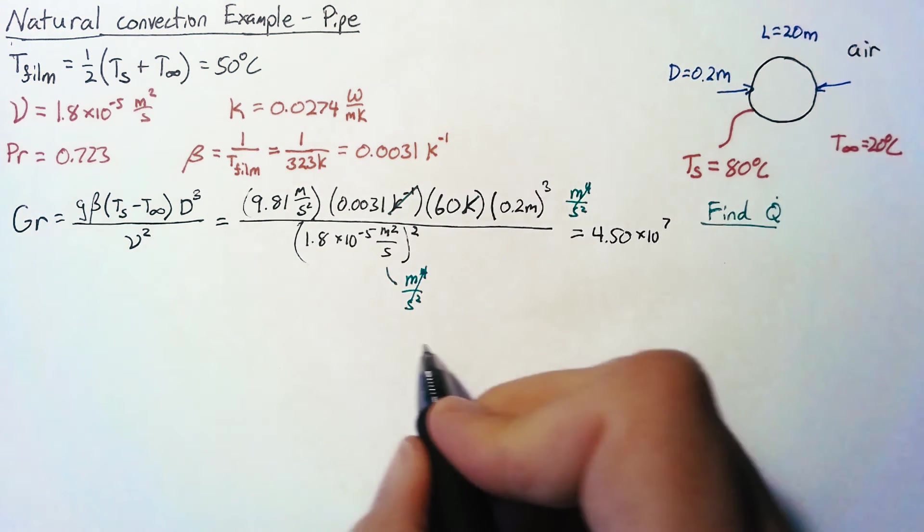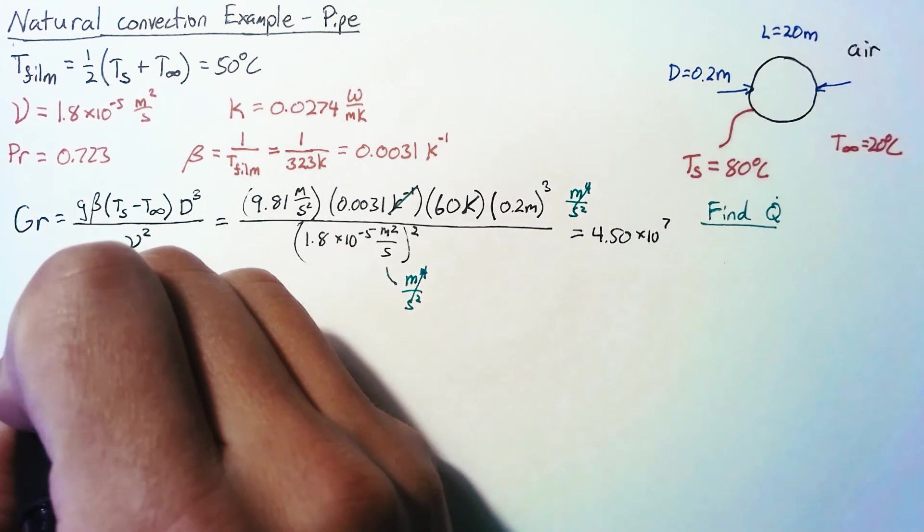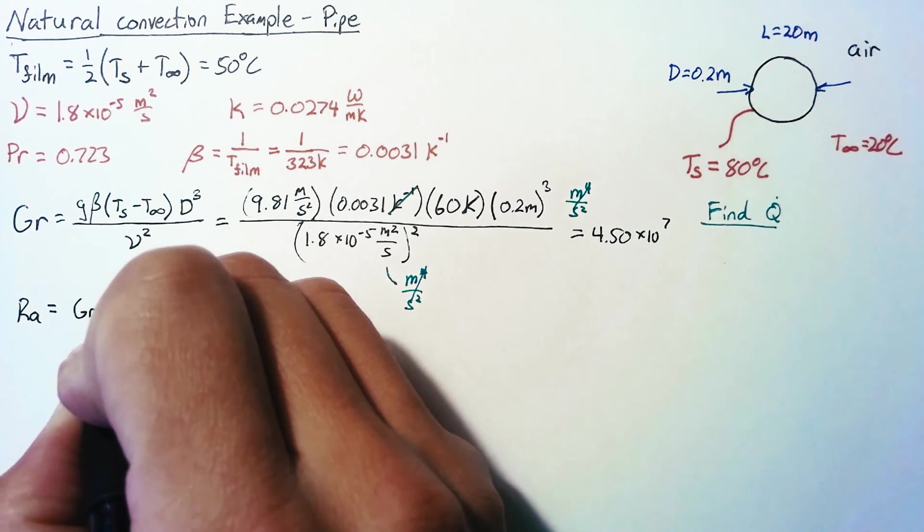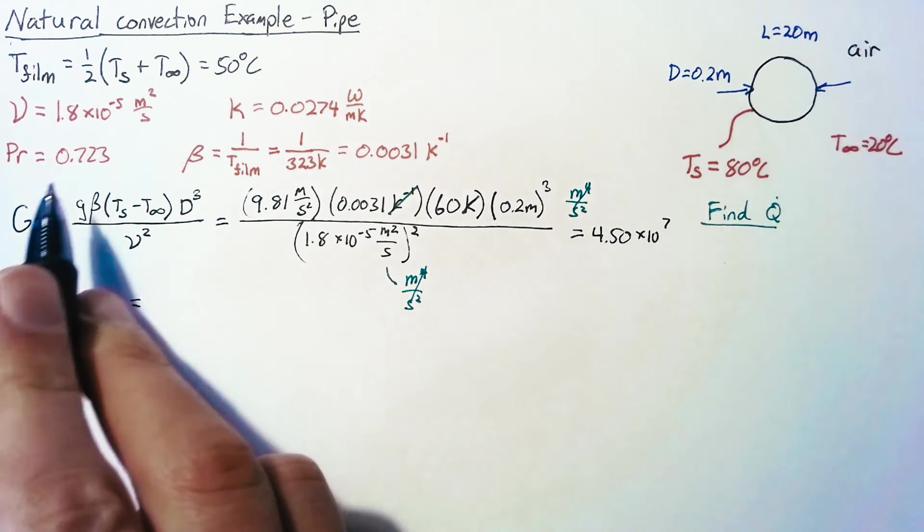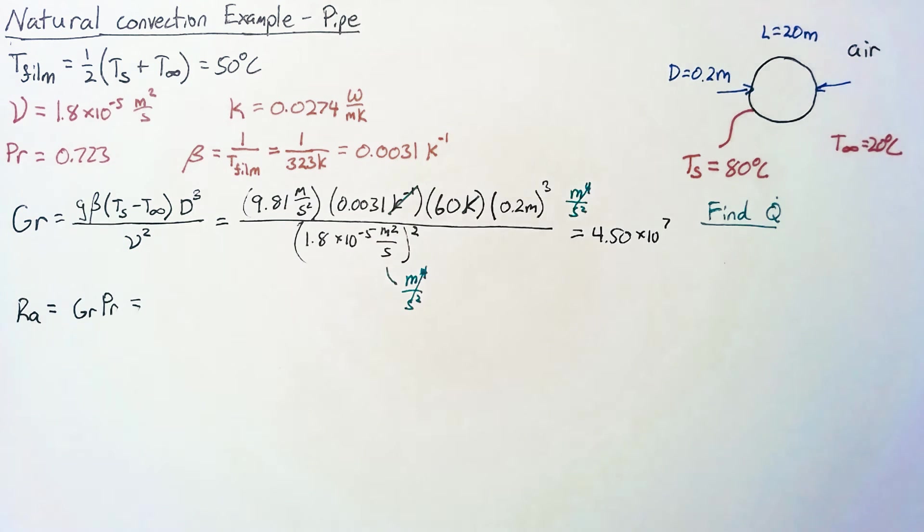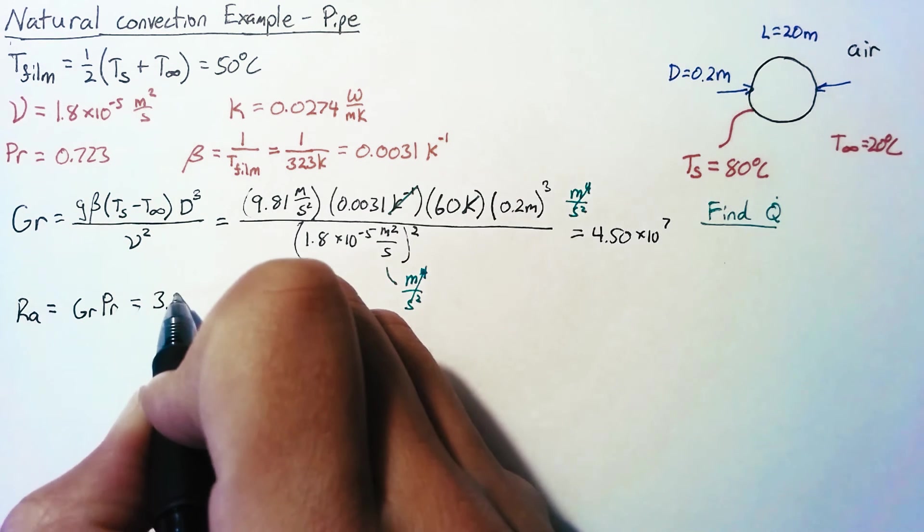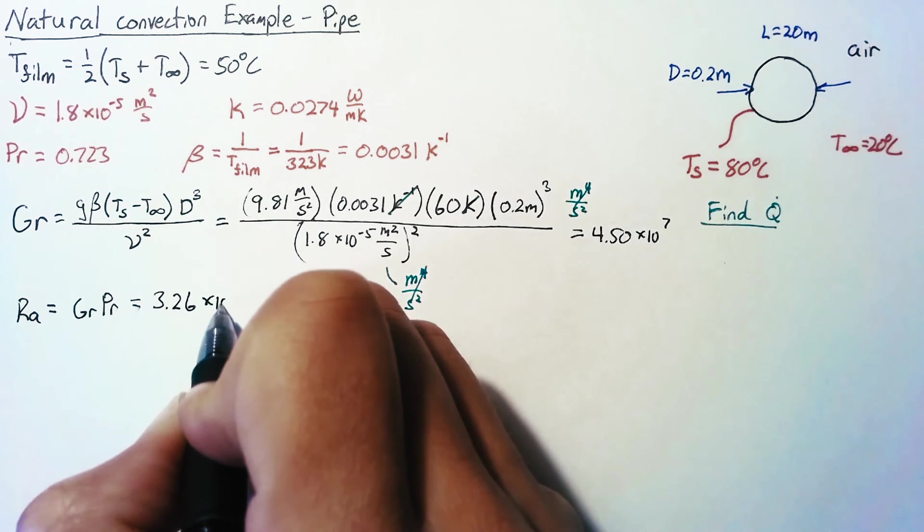Our next step is to calculate the Rayleigh number. This one's quite a bit simpler. It's simply the Grashof number multiplied by the Prandtl number. The Prandtl number is just 0.723. And so our Rayleigh number here is going to be 3.26 times 10 to the seventh.